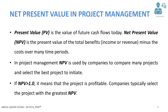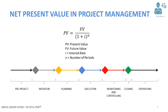NPV is also used to compare projects and pick the most profitable one. If NPV is greater than zero it means that the project is profitable. If the value is less than zero it means that the project is not profitable — it will make losses for the company. If there are many projects each with a positive NPV, the company will choose the project with the higher NPV.